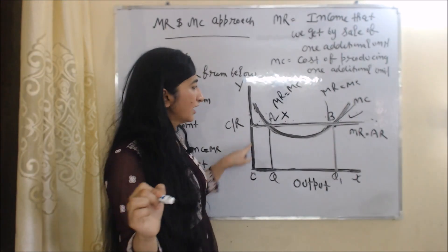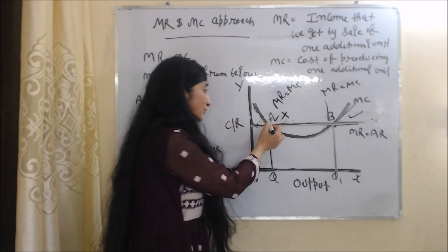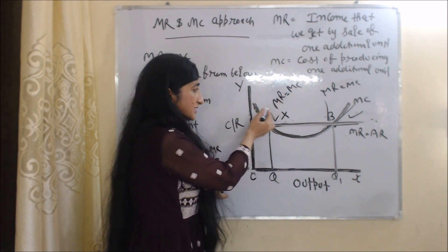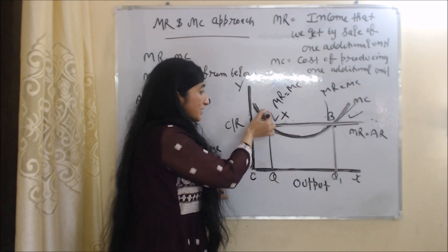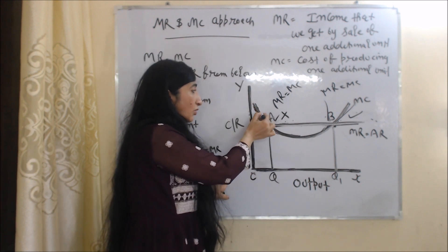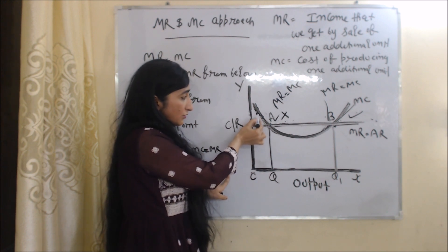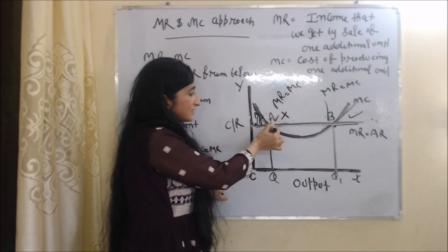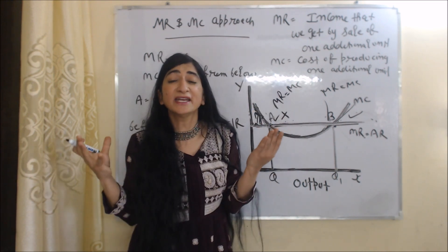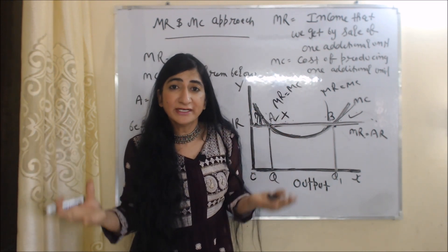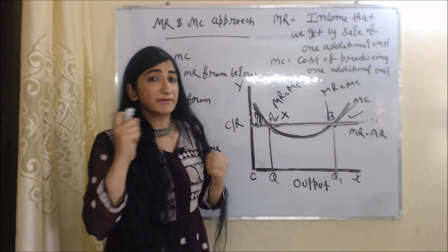However, A is not our stable equilibrium point — B is our stable equilibrium point. At point A, MR is equal to MC but MC cuts MR from above, not from below. Cutting from above means that before point A, marginal cost was more than marginal revenue — the cost curve is above the revenue curve, showing losses. Since the firm has not earned any profit yet, point A cannot be a stable equilibrium point.